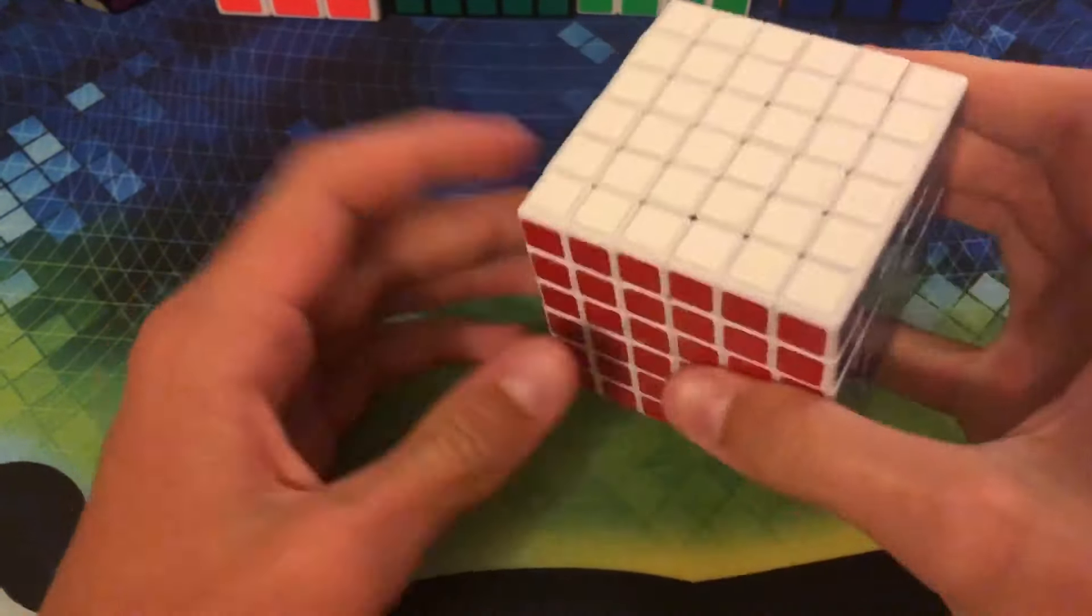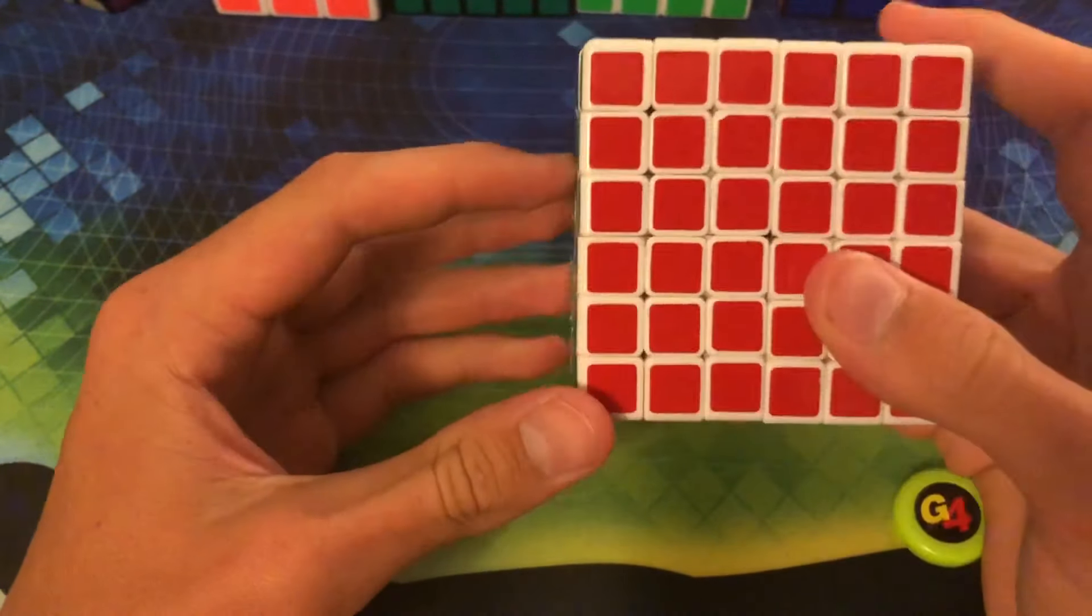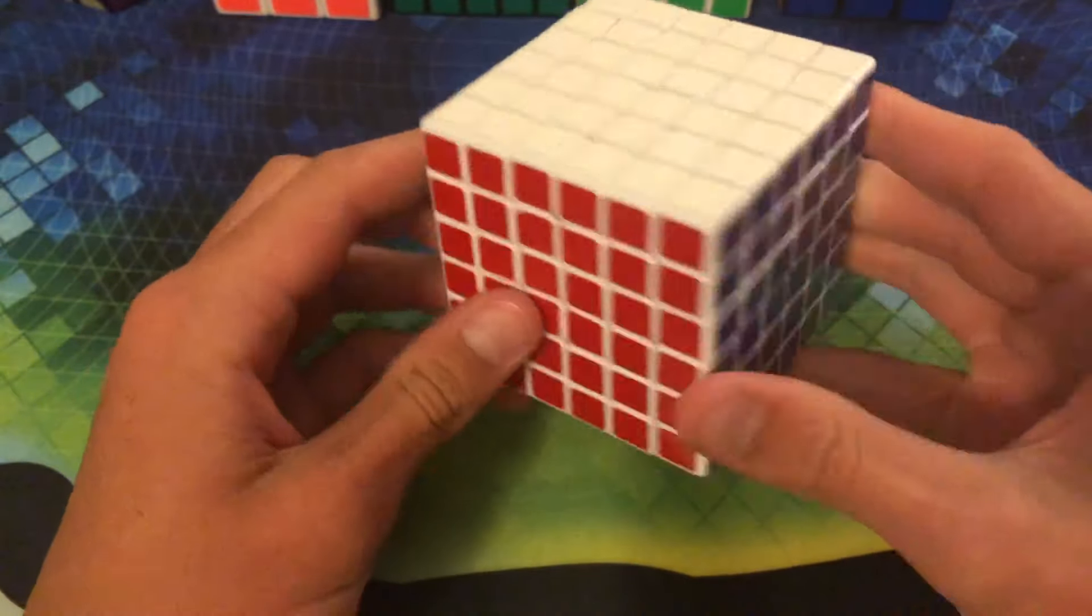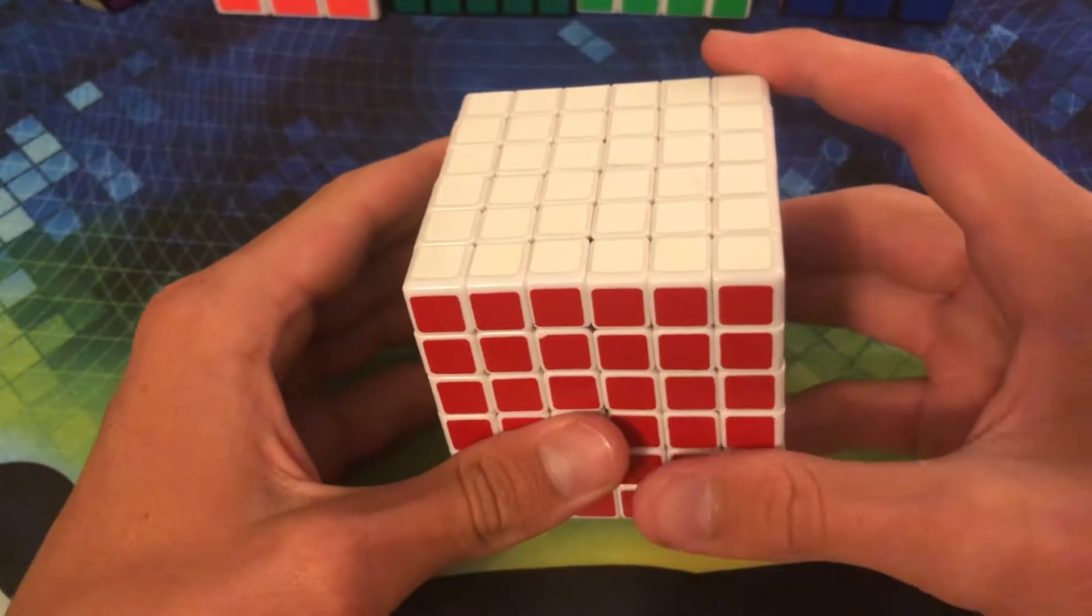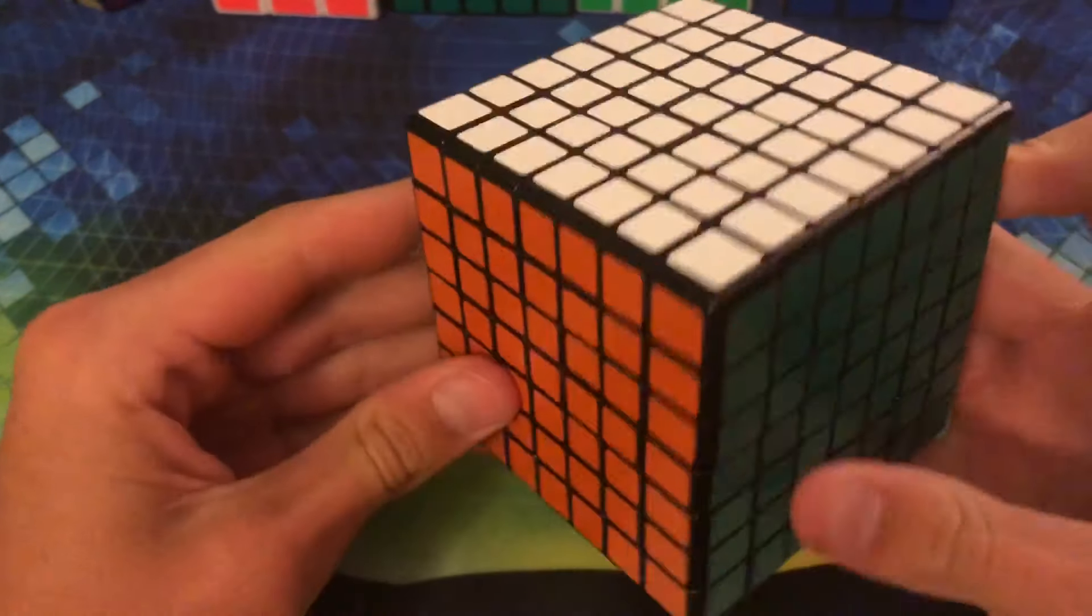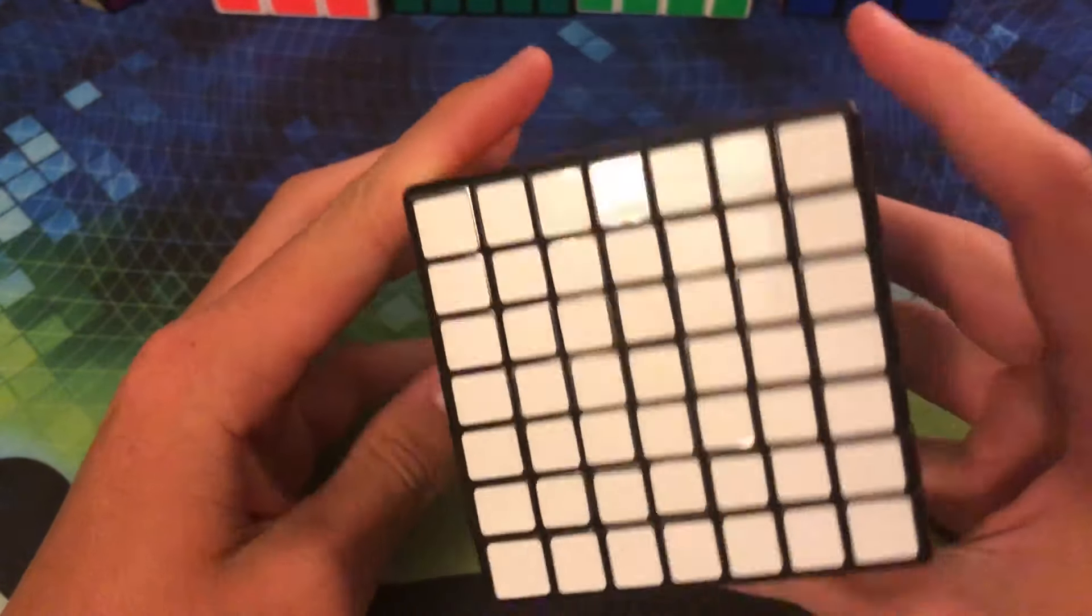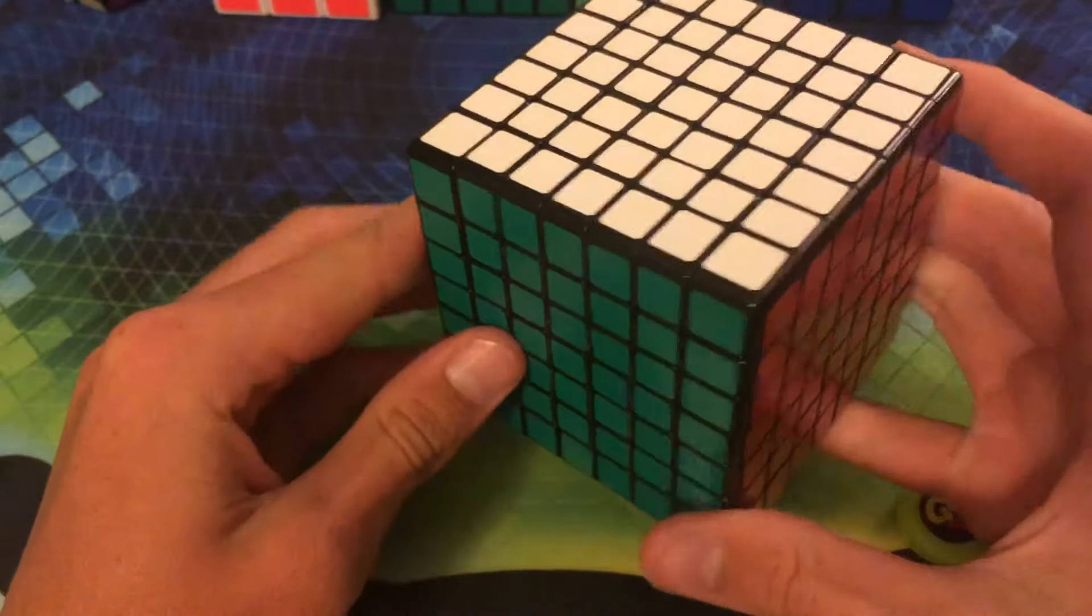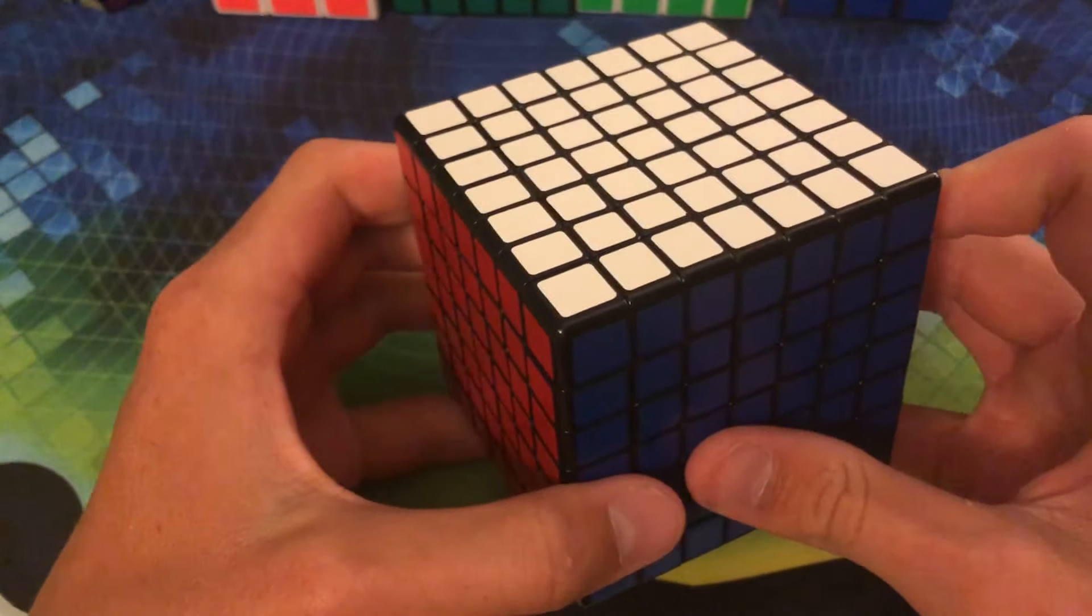And not long after, I was gifted a Shengshou 6x6, which, at the time, I didn't know how bad this cube really was, but it was sort of the first cube that I ever had that was bigger than a 5x5. And then, soon after that, I was obsessed with big cubes, so I wanted to get the next step up, which was, of course, a Shengshou 7x7. In hindsight, I probably shouldn't have got a Shengshou, but I guess I didn't know much better at the time.